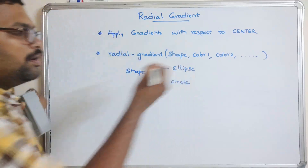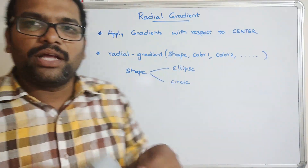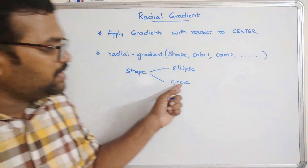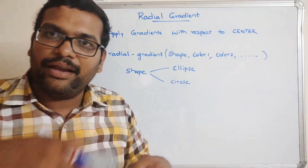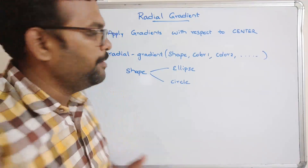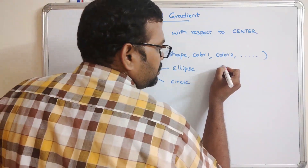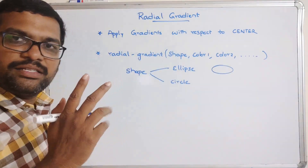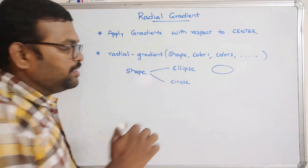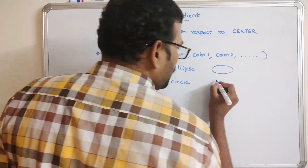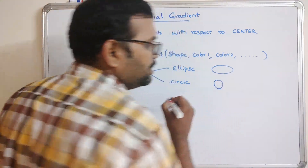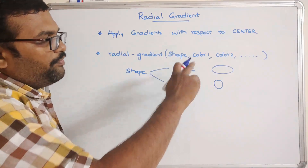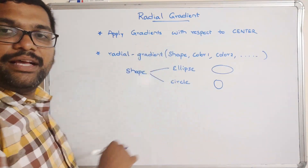If you use Ellipse, the gradient will be applied in an ellipse format, and if you give Circle, the gradient will be applied in a circular format. Ellipse has two different radii — X Radius and Y Radius — while Circle has only a single radius. These are the two different shapes we can apply for the gradient.